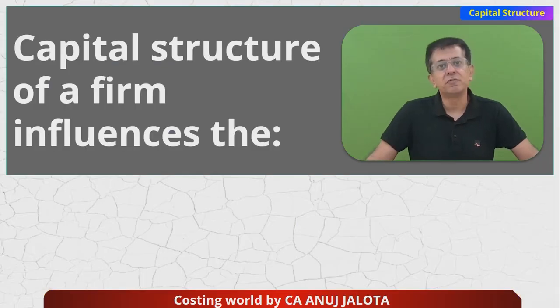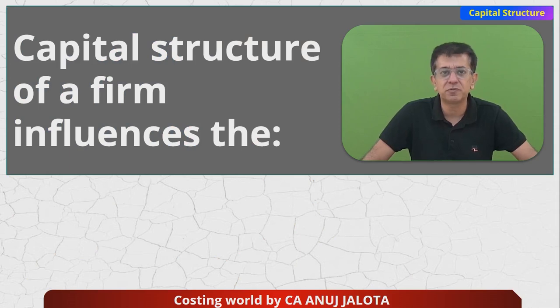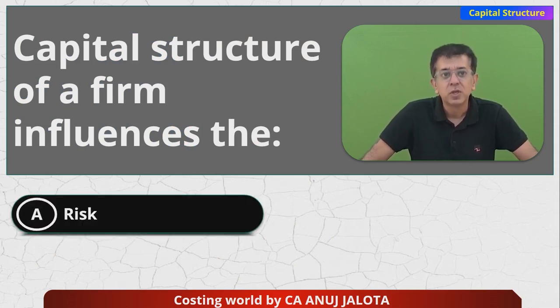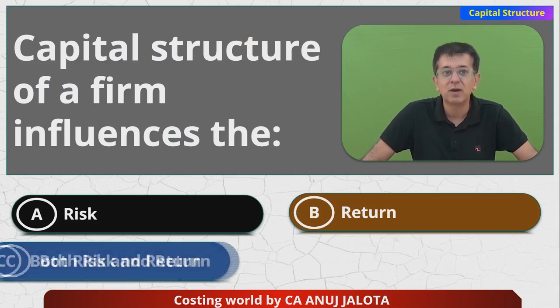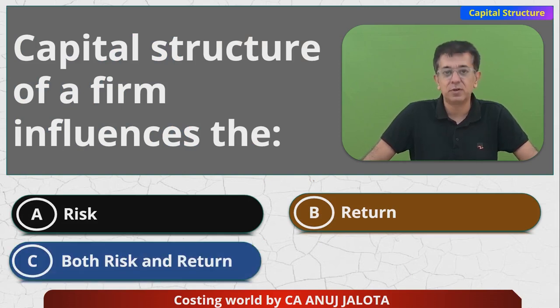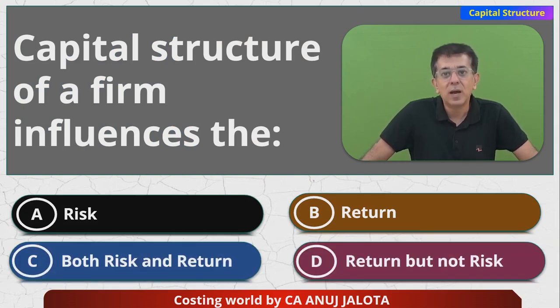Let's start with today's question: Capital structure of a firm influences — (A) Risk, (B) Returns, (C) Both risk and return, or (D) Return but not risk.